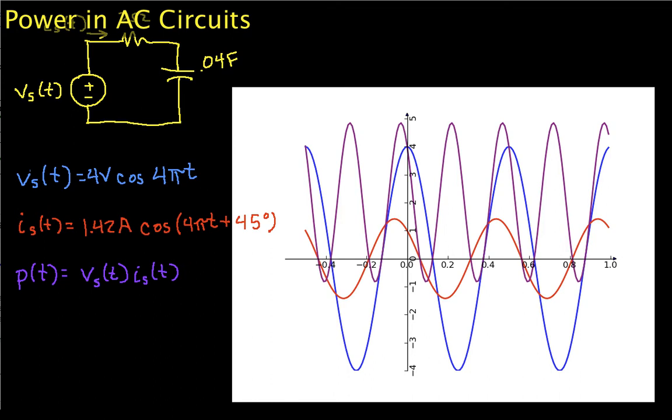We'll begin by looking at voltages and currents in this simple circuit. So I've set up this circuit so that the source voltage is a cosine with frequency 2, and it has a magnitude of 4 volts.